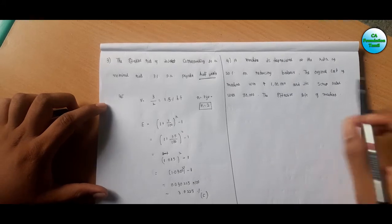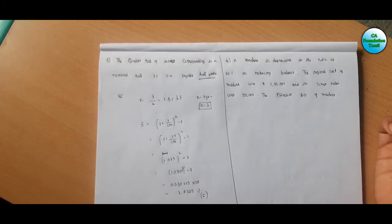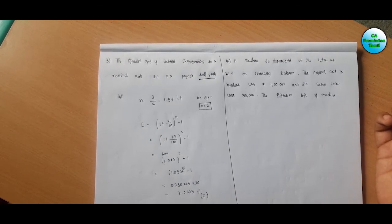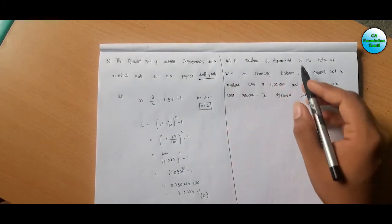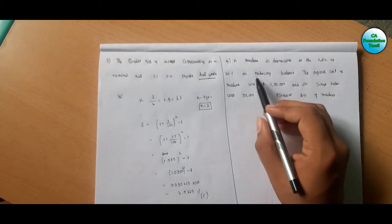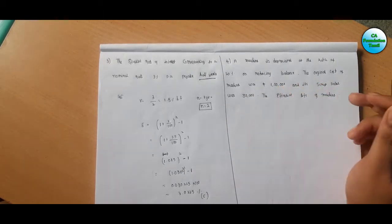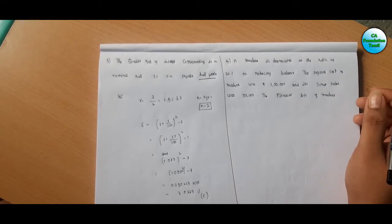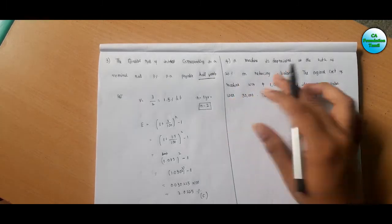Sum number 4 is depreciation. Depreciation is like a business math concept. We can get depreciation in the accounts. Machinery is depreciated at the rate of 20% on reducing balance. The original cost of machinery was 1 lakh and its scrap value was 30,000. The machinery will depreciate at the rate of 20% on reducing balance.